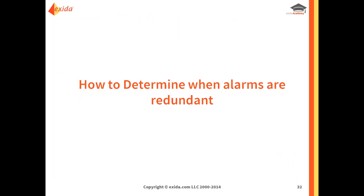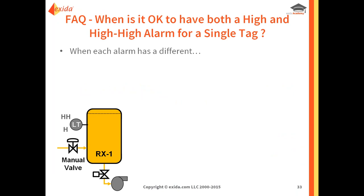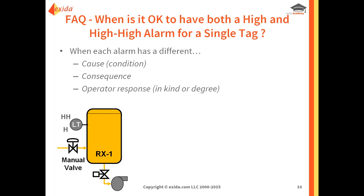How do we determine when alarms are redundant — for example, when is it okay to have both a high and a high-high alarm? In the past, a high-high might have been configured as a backup in case the operator missed the high alarm. That's not a productive approach. Instead, for each potential alarm, analyze the cause, consequence, and corrective action. Something must be different between the two alarms for those three criteria. If nothing is different between the high and high-high, you have duplicate alarms and don't need both.